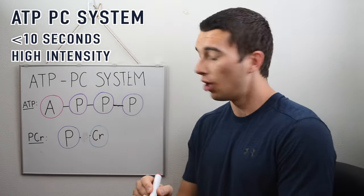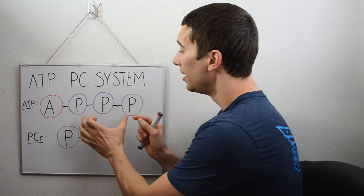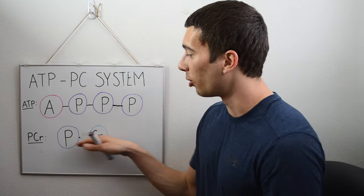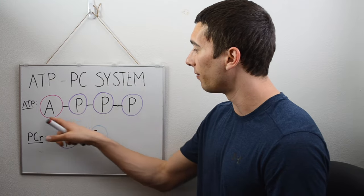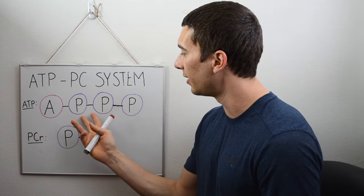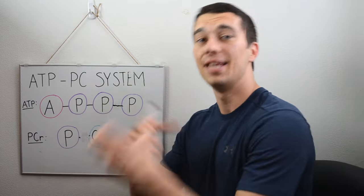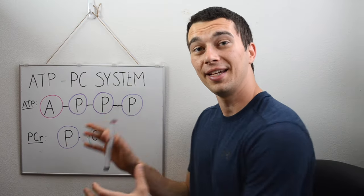Really important here guys: this is a high-energy bond. Creatine phosphate breaking allows that to reform from ADP with just two phosphates back to ATP, and then immediately use it for energy. So this is the system that's used within the first ten seconds of high-intensity exercise.